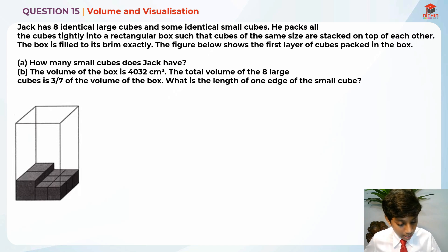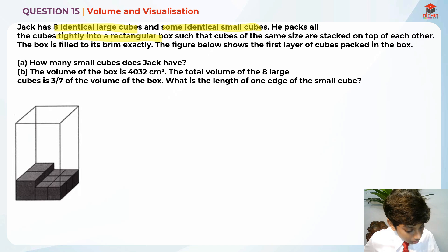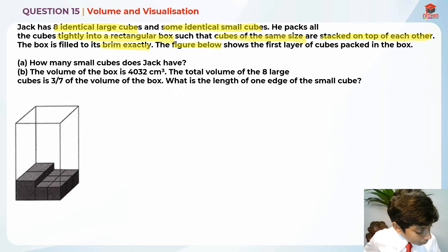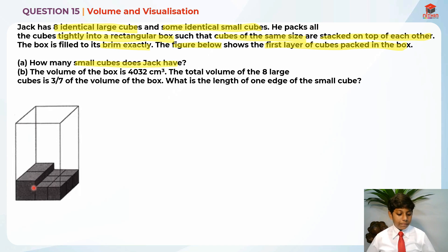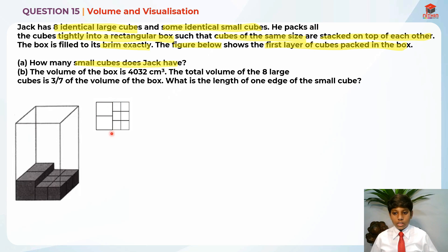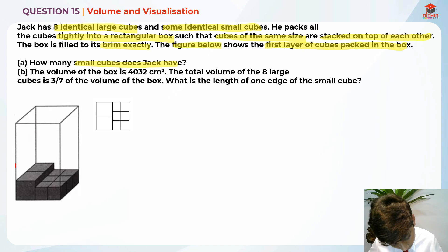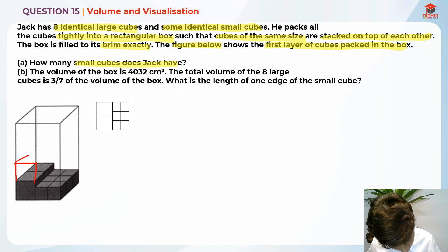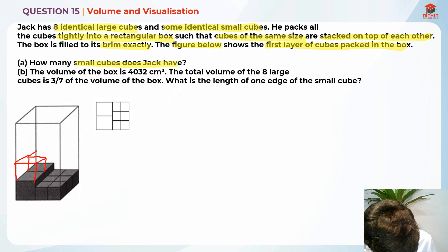Let's take a look at the question and highlight the key information. He has eight identical large cubes and some identical small cubes. He packs all the cubes tightly into a rectangular box such that the cubes of the same size are stacked on top of each other, filled to its brim exactly. The figure below shows the first layer of cubes packed into the box. First, I'm going to draw the top view — there are two large squares and six small squares. After that, I'm going to draw the front view, which shows what it looks like when another cube is added on top.